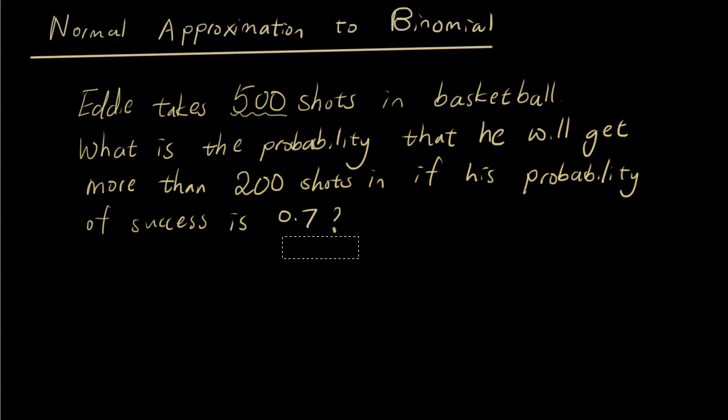Hey guys, it's Eddie the Magic Monk. In this lesson, we're going to talk about how to use the normal distribution to approximate binomial distribution problems. Basically, what we're saying is we have a binomial distribution real-life context, and we want to use the way that we solve a normal distribution problem on this binomial distribution problem.